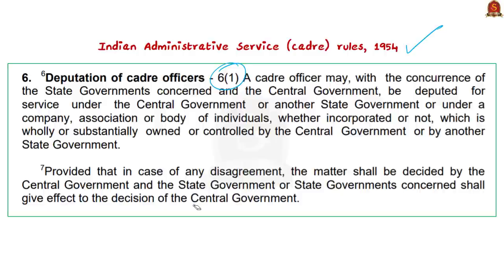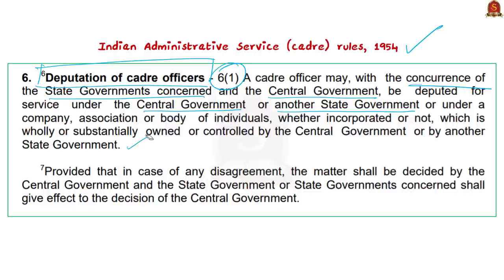Rule 6 Clause 1 pertains to the deputation of cadre officers. According to this rule, a cadre officer may be deputed for service with the concurrence of the state governments concerned and also the central government. The officer can be deputed for service under the central government, another state government, or under a company, association or body of individuals wholly or substantially owned or controlled by the central government or another state government. Based on this, the committee asked the Chief Secretary to report to New Delhi.